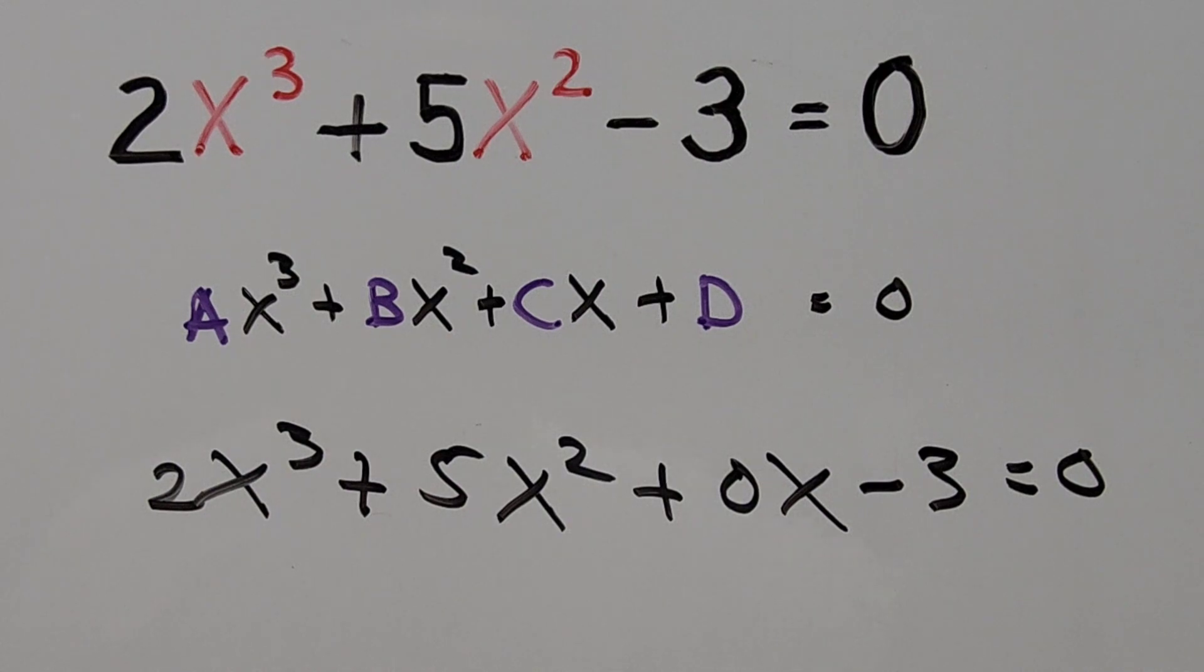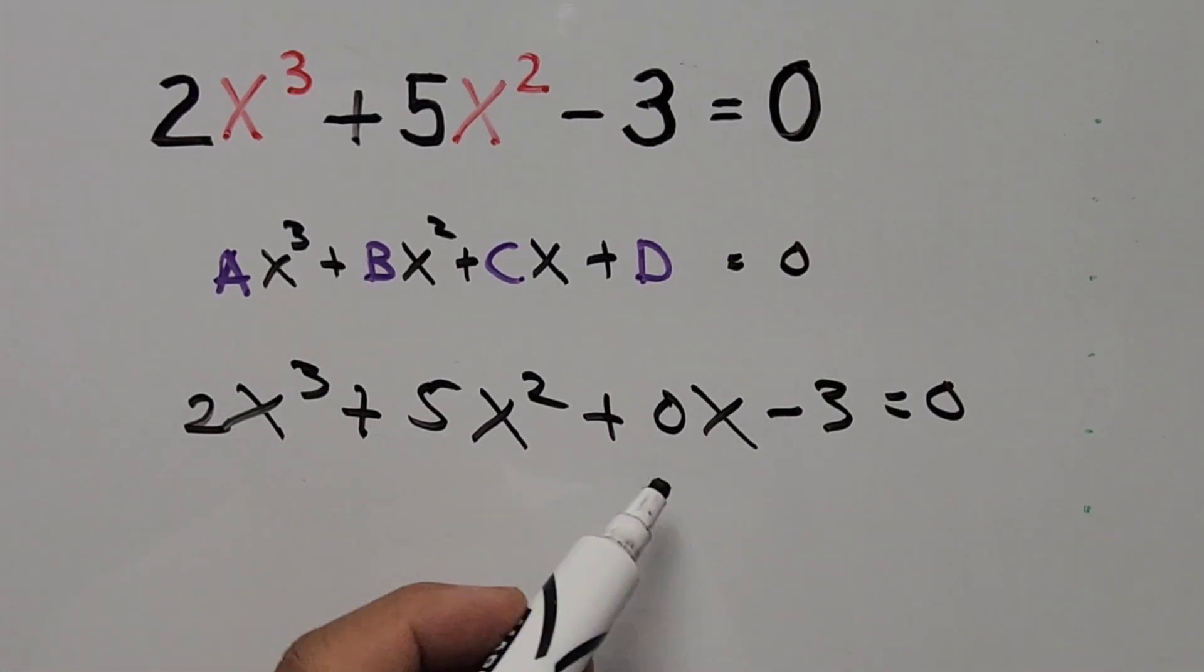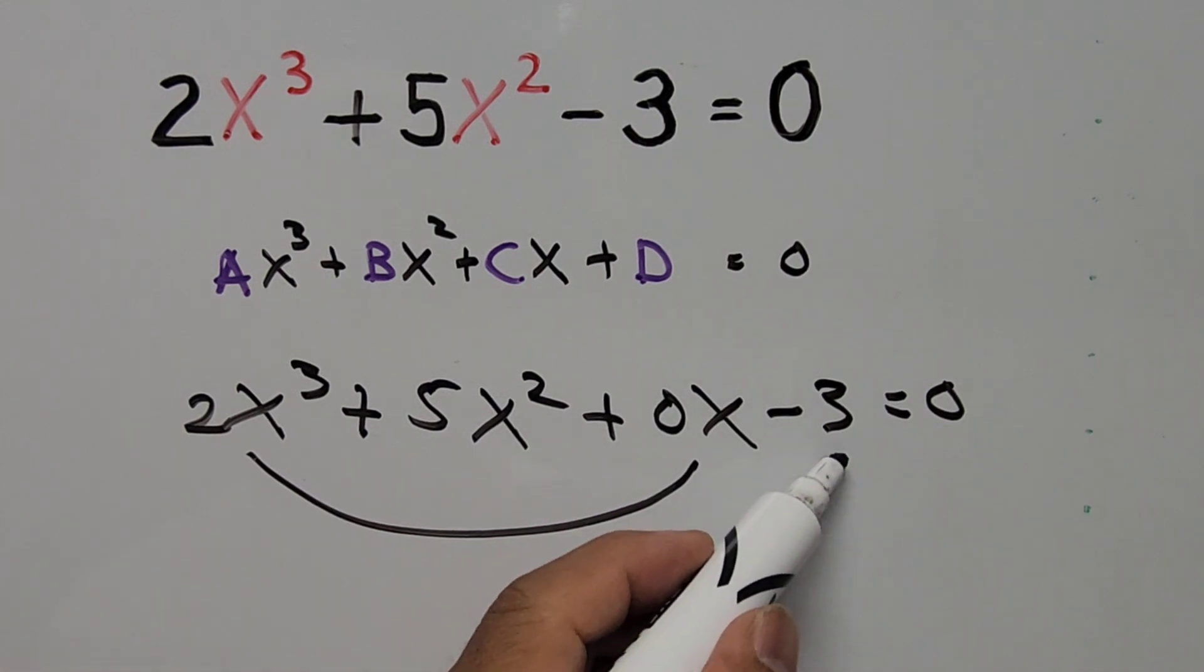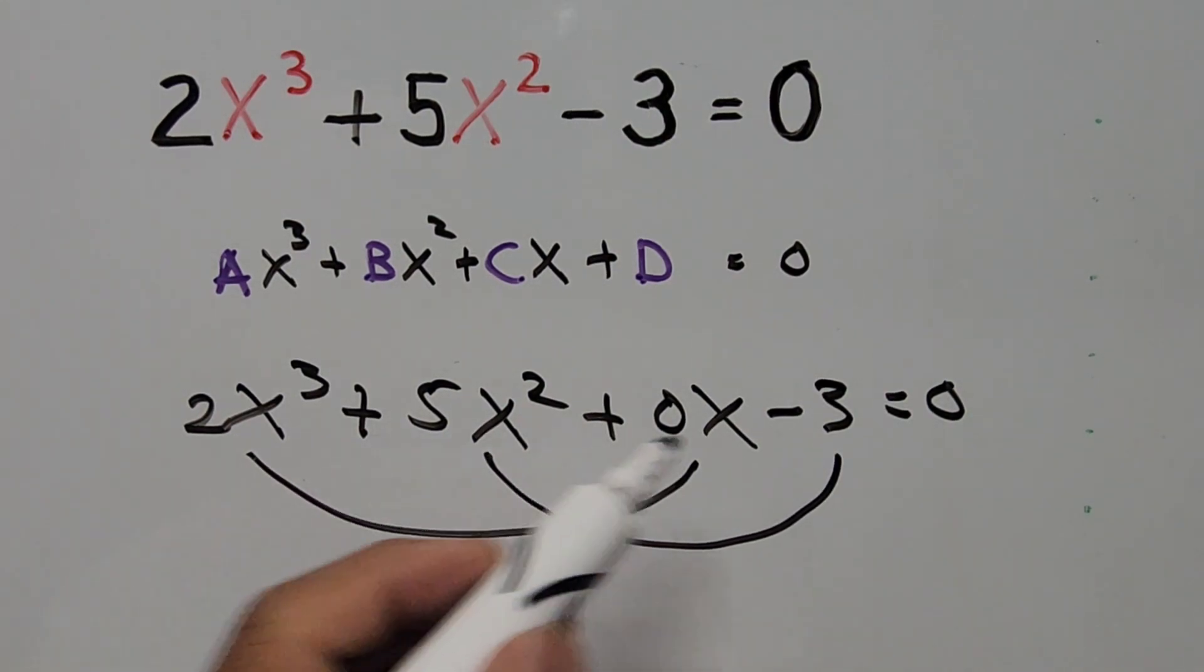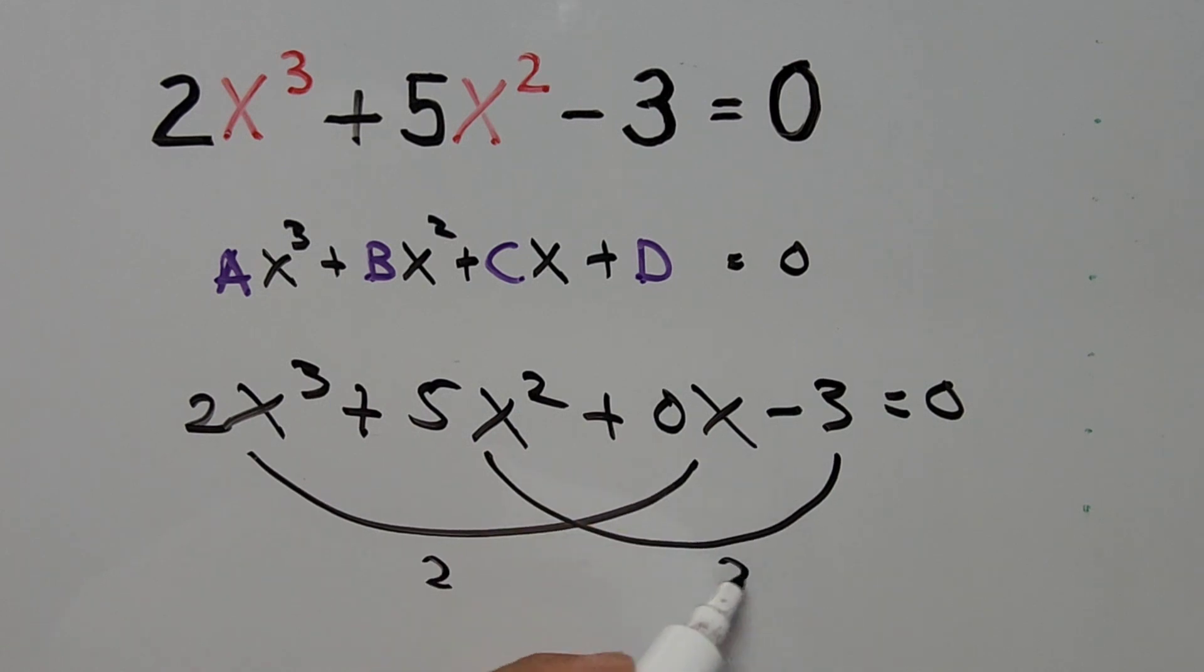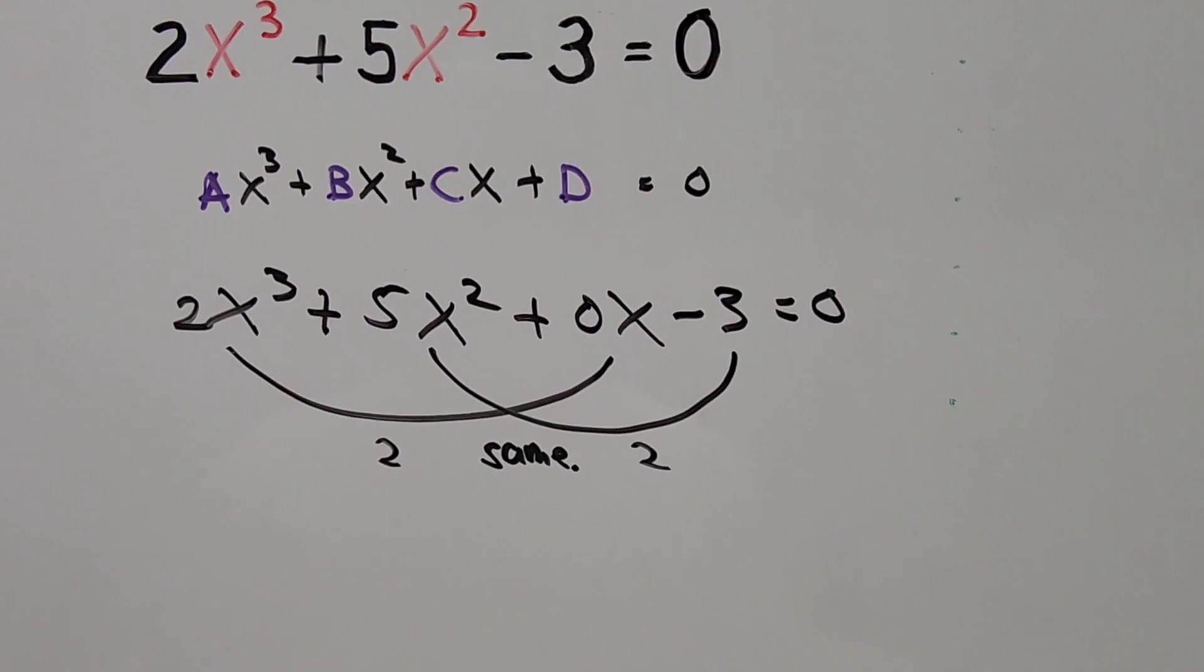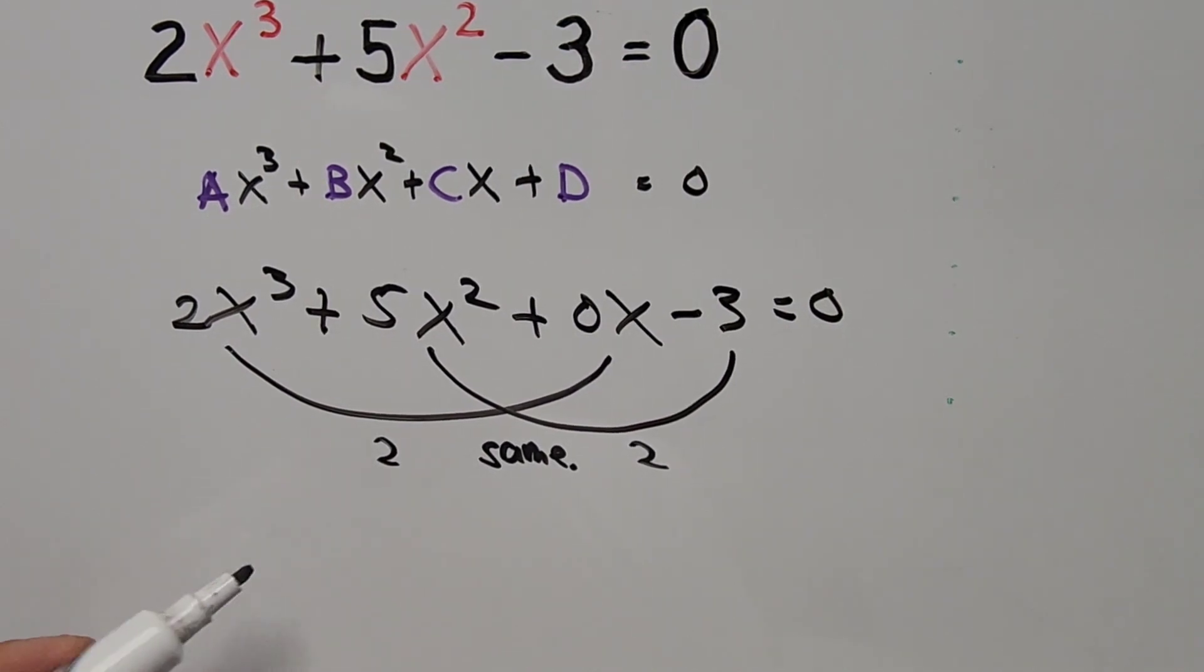So what we're going to do next is we're using the alternate term method. Here, if you find these two alternate terms, the sum of the coefficients of the alternate terms to be the same. Like in here, 2 + 0, that's 2. And then 5 - 3, that's 2 again. So since these are the same, this simply means that one of the values of x is -1.